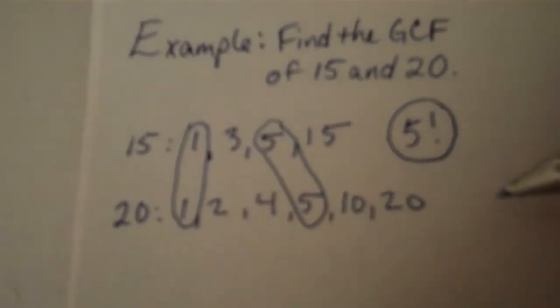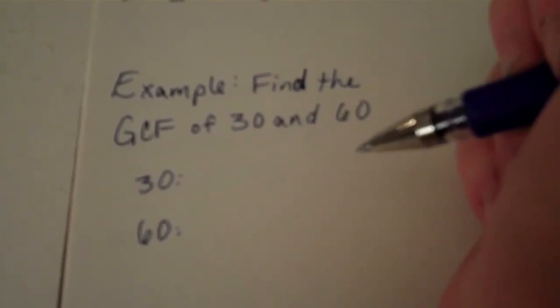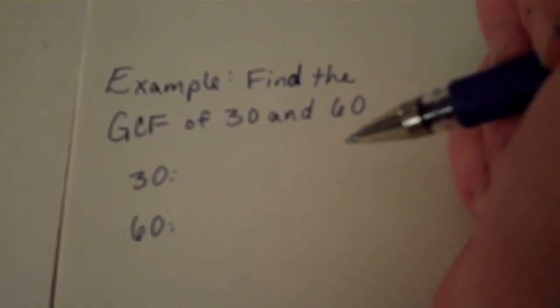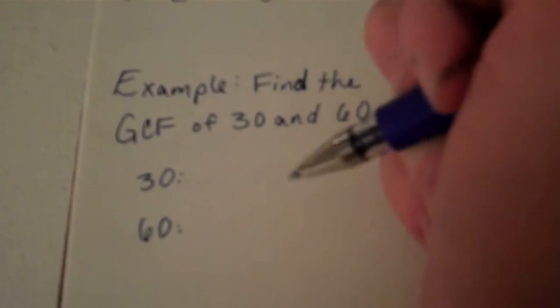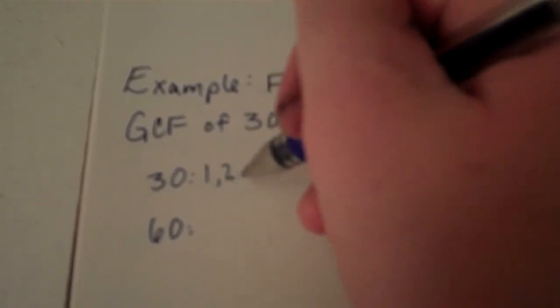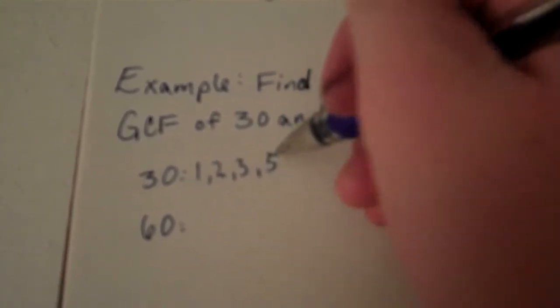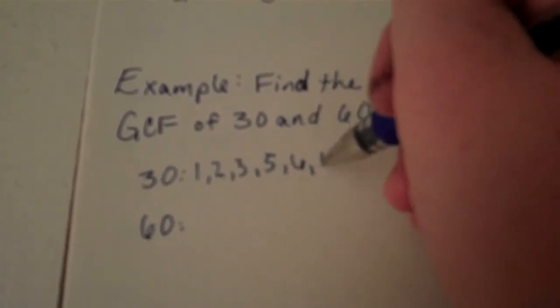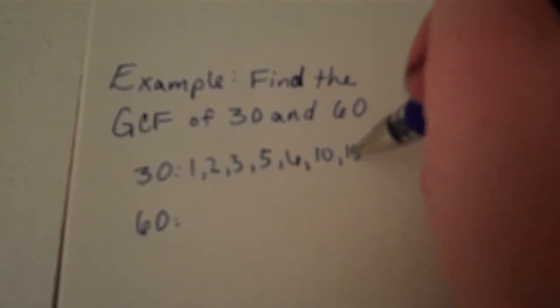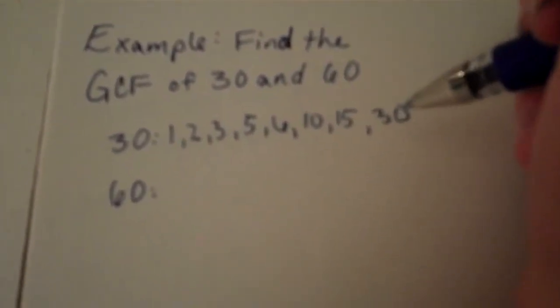Here's another example. Find the greatest common factor of thirty and sixty. I'll start by listing all the factors of thirty: one, two, three, five, six, ten, fifteen, and thirty.